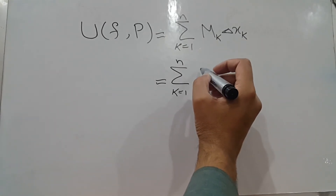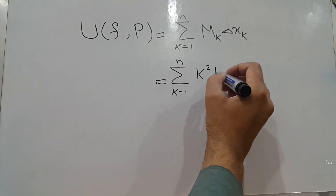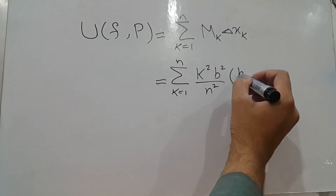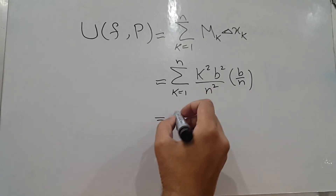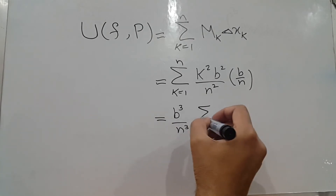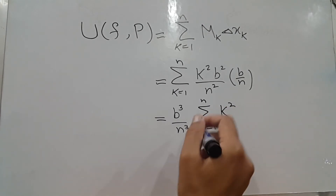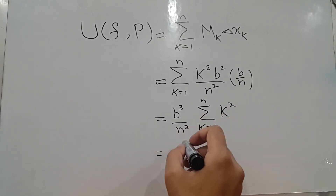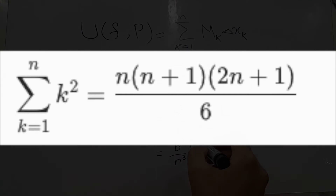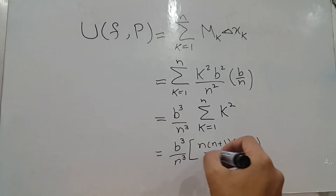The upper sum U(P, f) is computed by substituting M_k = k²b²/n² and Δx_k = b/n. This gives (b³/n³) · Σ_{k=1}^{n} k², which equals (b³/n³) · [n(n+1)(2n+1)/6], simplifying to b³(n+1)(2n+1) / (6n²).